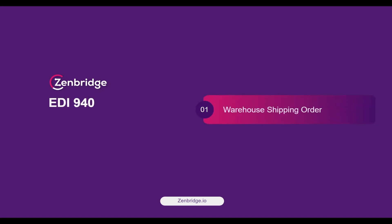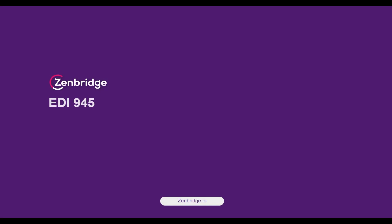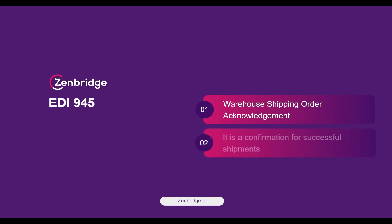EDI 940 is a warehouse shipping order that represents a buyer or seller's request to a warehouse to ship products stated in the request. EDI 945 is a warehouse shipping order acknowledgement that is sent to confirm that a shipment has been made for an EDI 940.